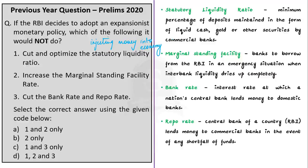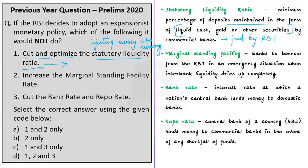Now let us see the options one by one. The first option is about the Statutory Liquidity Ratio. SLR is a minimum percentage of deposits that a commercial bank has to maintain in the form of liquid cash, gold, or other securities — fixed by the RBI. A lower SLR gives banks more room to lend, so cutting the SLR is an expansionist monetary policy.